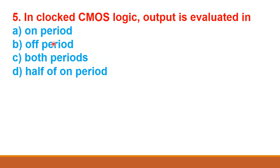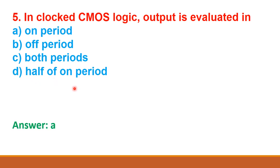Next question: in clocked CMOS logic, output is evaluated in — option A: on period, option B: off period, option C: both periods (on and off), option D: half of the on period. The correct answer is option A: on period.